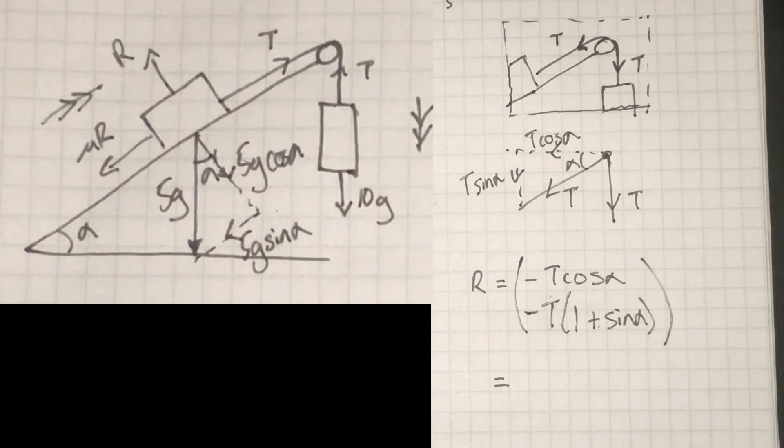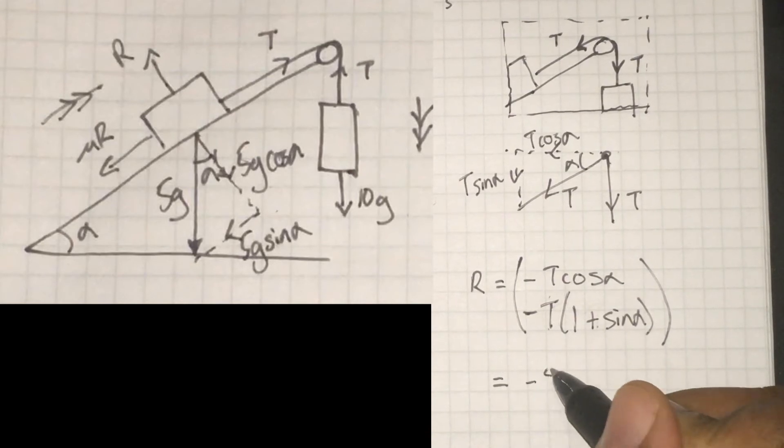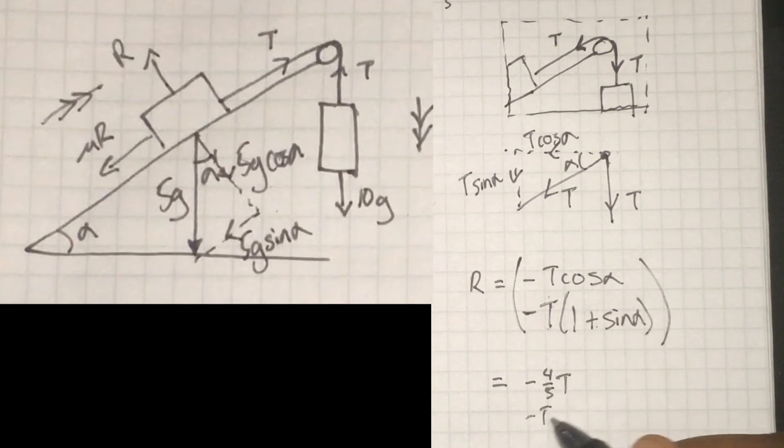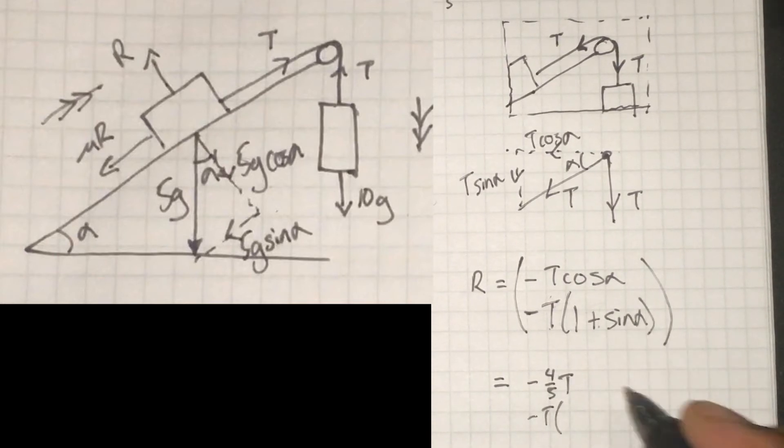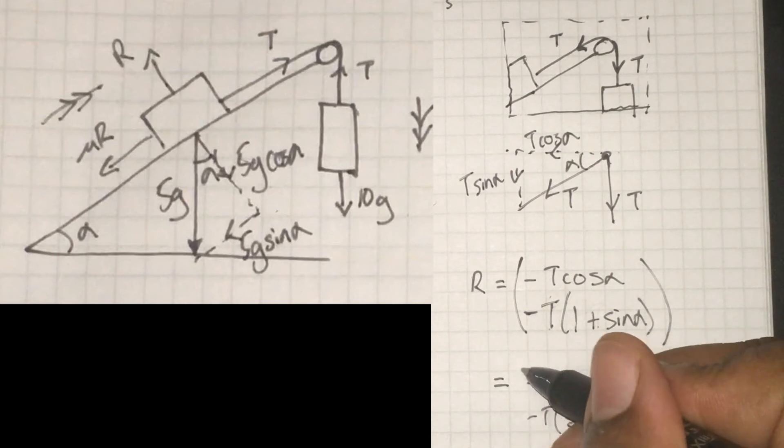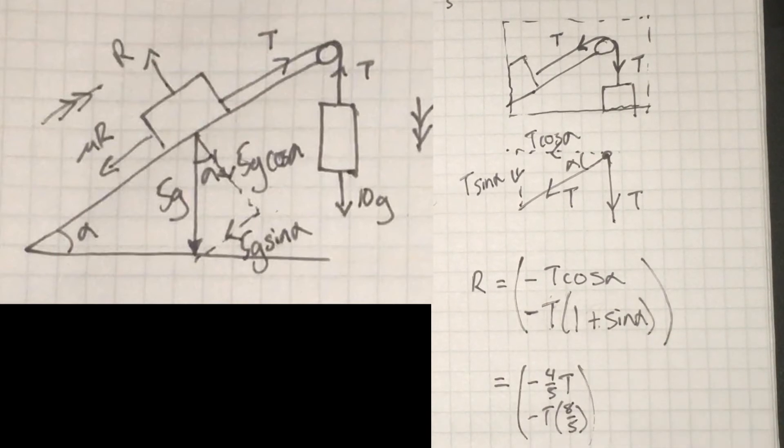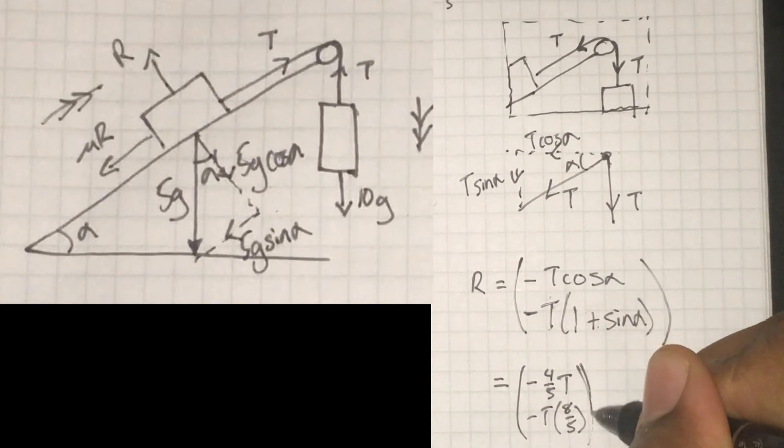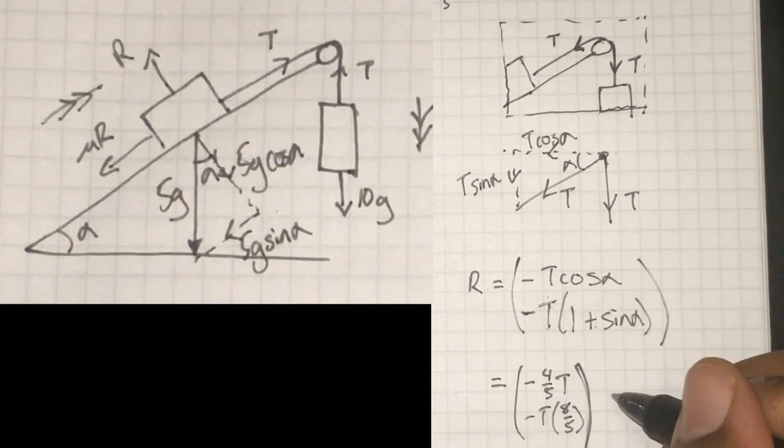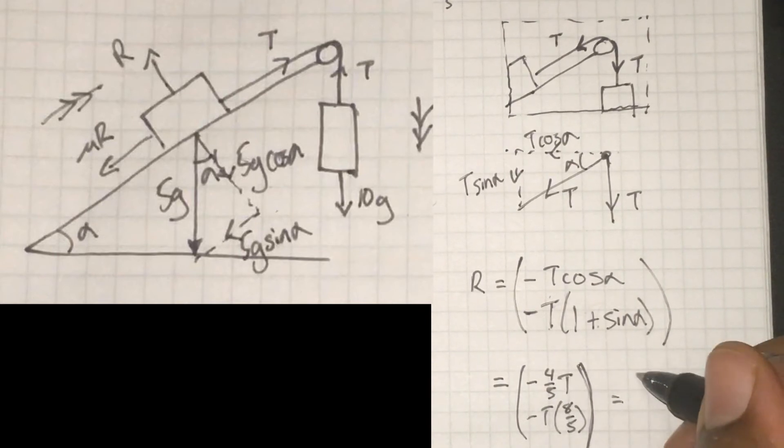We've already calculated T, so we can actually get numerical values for this vector. This vector is the force acting on the pulley. So just substitute these values, substitute in the value of T, and I actually just get a numerical vector.